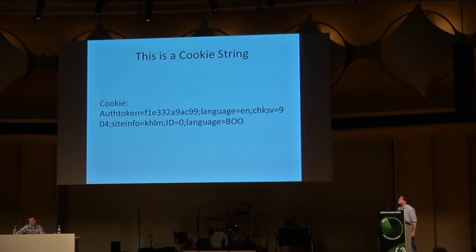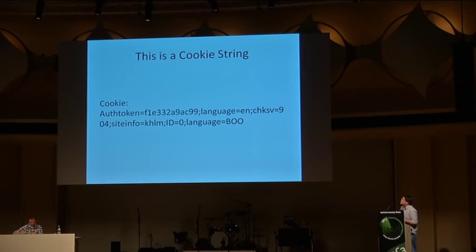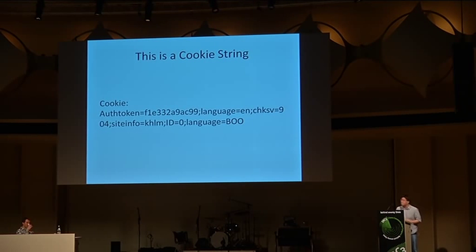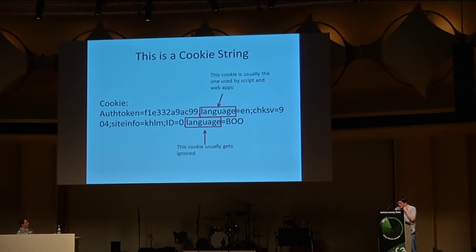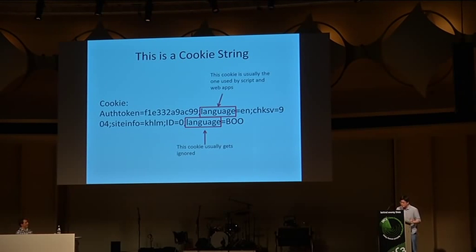For those of you that don't know what a cookie is, it's essentially used to maintain state between the client and a server in a web application — it's essentially just a semicolon-delimited list of name-value pairs. In this case I have auth token, site info, etc. What's interesting is I actually have two language cookies shown in red, and the question I want you to think about is: what happens when there is a conflict where there are two cookies with the same name? It turns out it's usually the cookie that is first in the string that is processed or used by a script or web application — and that's really the basis for this attack: being able to override cookies in this manner.